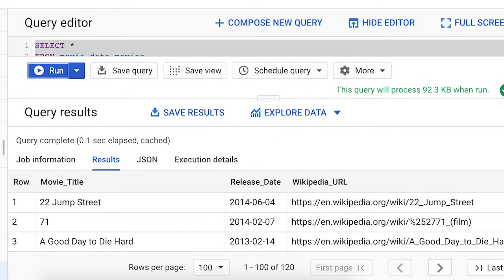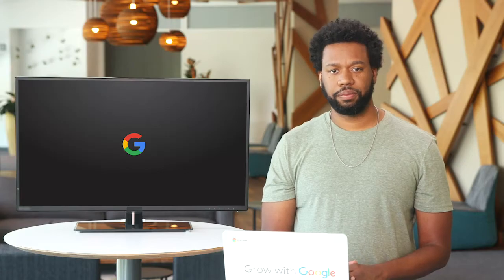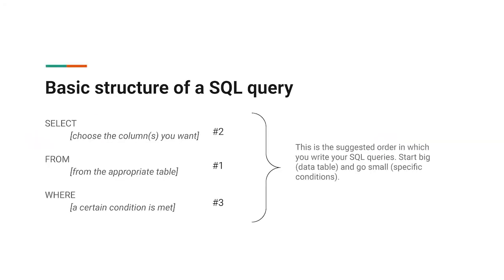In SQL, queries are universal. A query is the way we use SQL to communicate with the database. Here's the structure of a basic query. You can see that with this query, we can select specific data from a table. By adding WHERE, we can filter the data based on certain conditions.